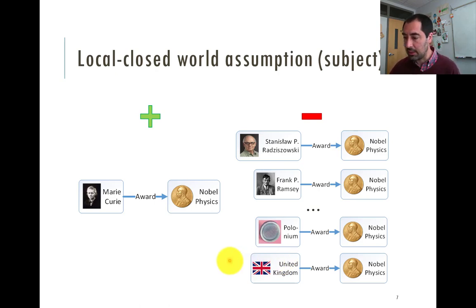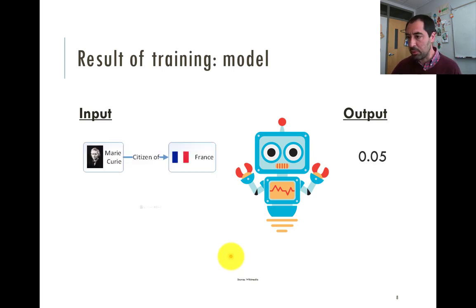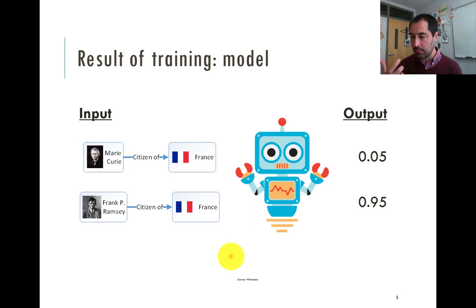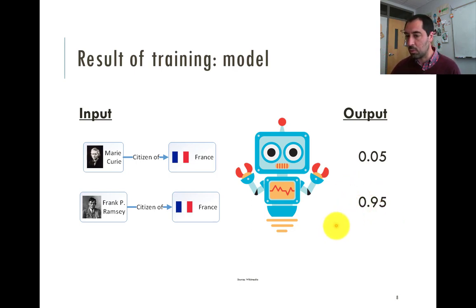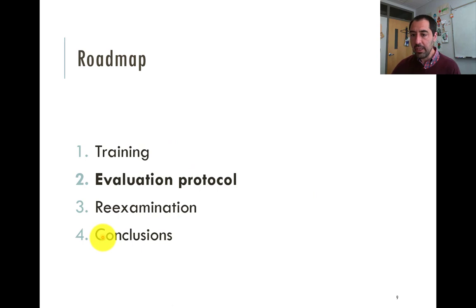For example, the United Kingdom got the Nobel Physics Award — that's somewhat plausible. The result of this process is a model that takes these edges as input and outputs a score. We assume that a score closer to zero is better, and a score closer to one is worse. So if Marie Curie citizen of France has score 0.05, we're pretty sure it's true. If the score is close to one, we're pretty sure it's not true. This is how training works in these models.